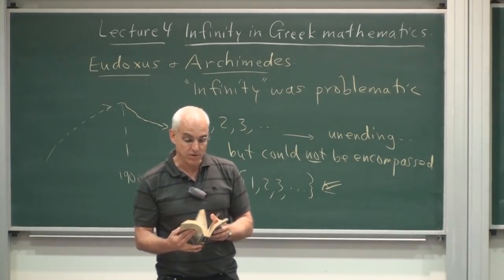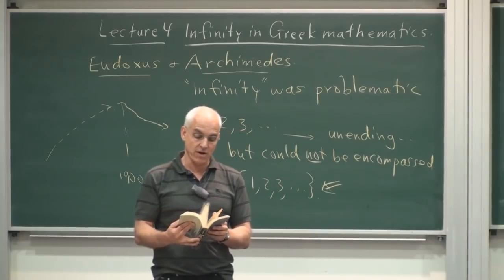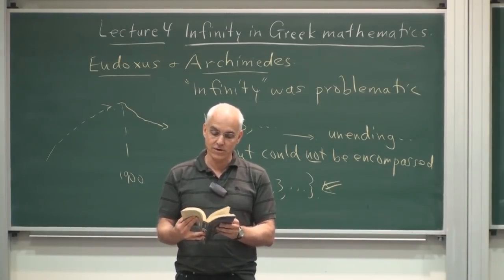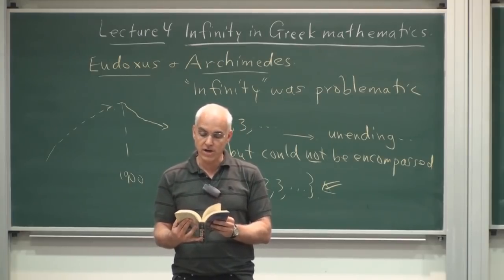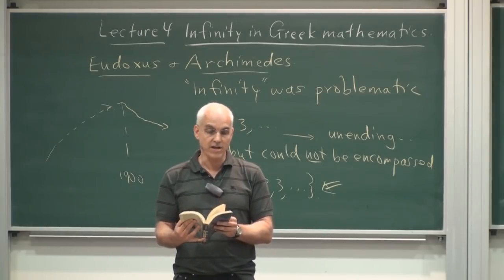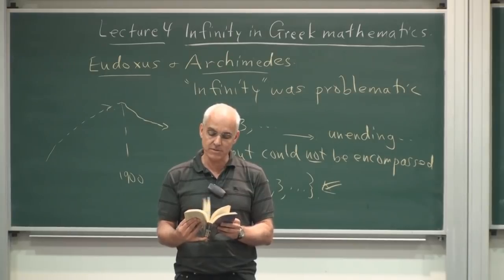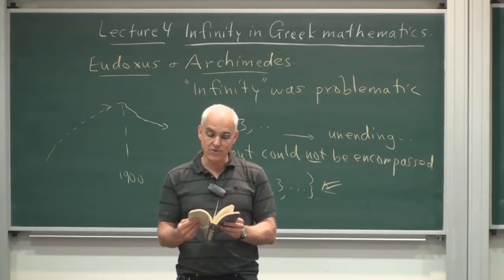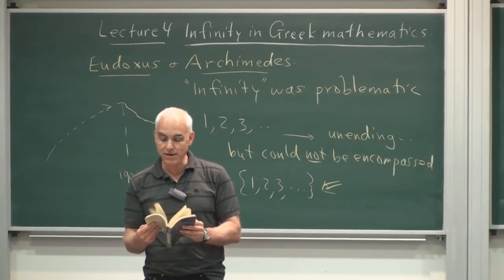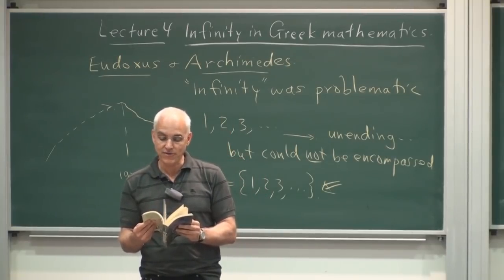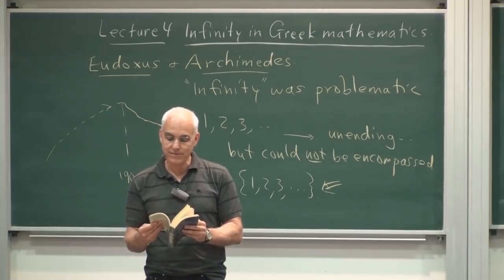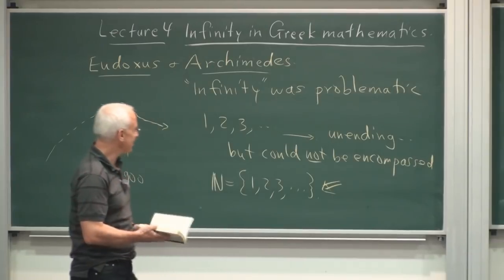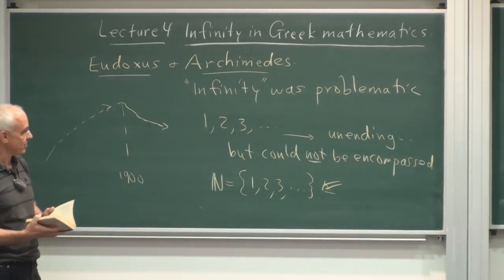Archimedes writes on the sphere and cylinder, measurement of the circle, on conoids and spheroids, on spirals, one of his famous books, on the equilibrium of planes, the sand reckoner, quadrature of the parabola, on floating bodies. The cattle problem is here as well. Those are some of the topics that he thought about.